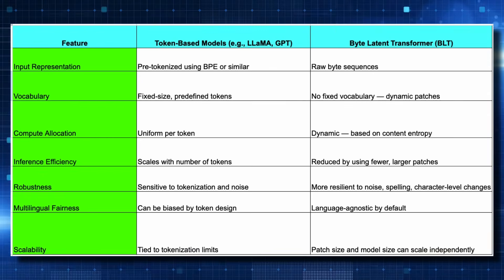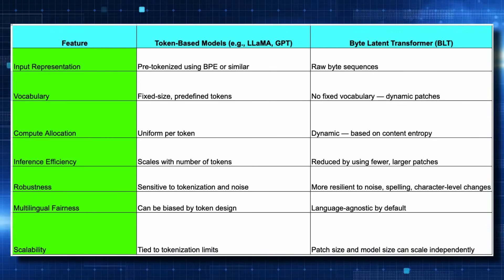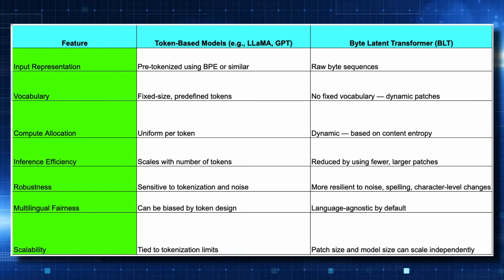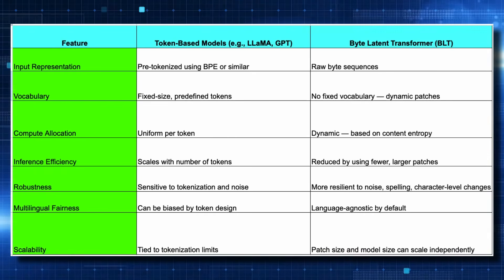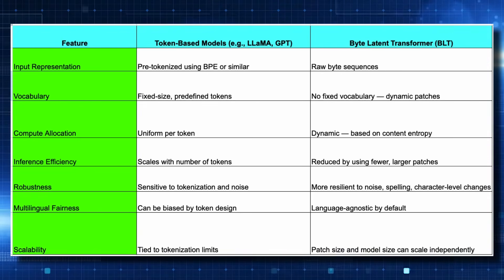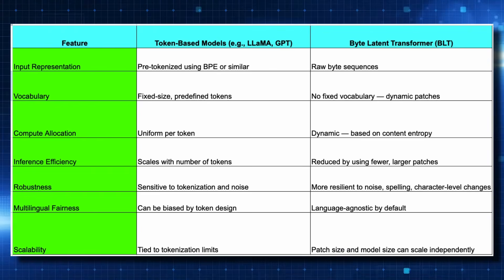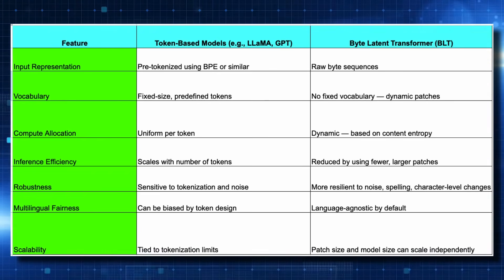One of the biggest problems with large language models is that they have a predefined, fixed set of tokens called vocabulary — like handing a dictionary to the model so it can only pick words from it. That constrains innovation. In BLT there is no fixed vocabulary, meaning the model is not constrained in what it can express. Instead, it creates dynamic patches, which can lead to new concepts and things it has not learned before.